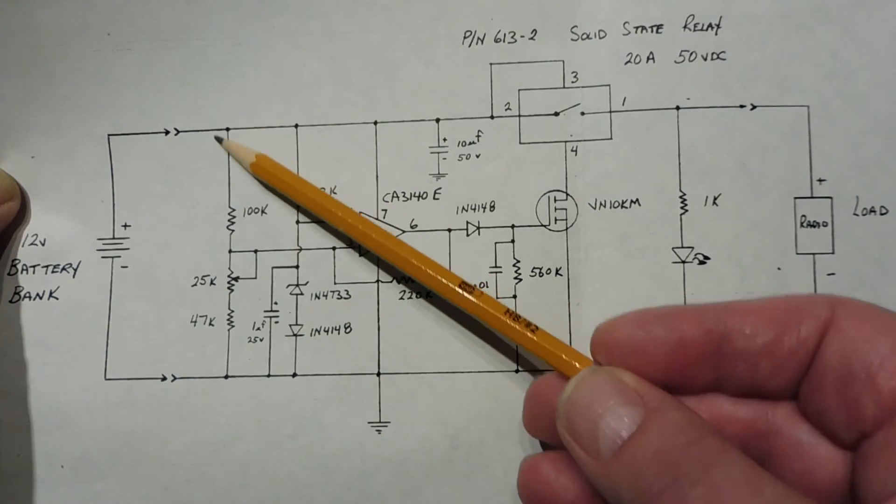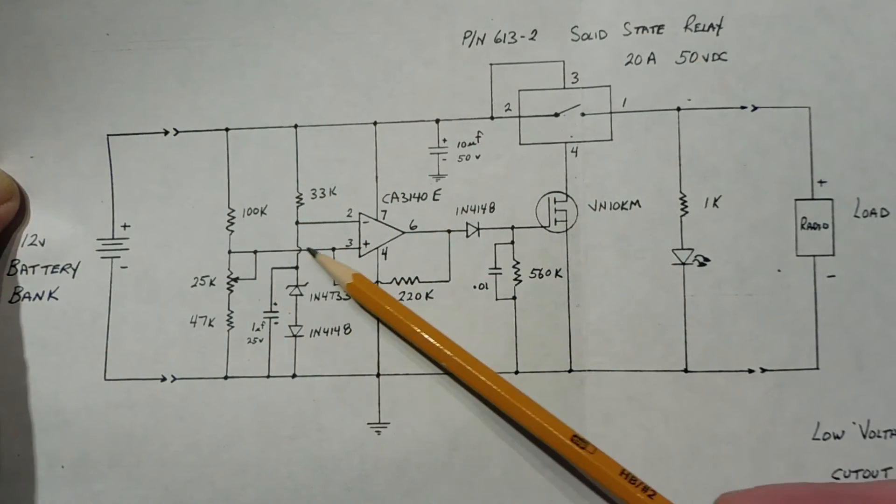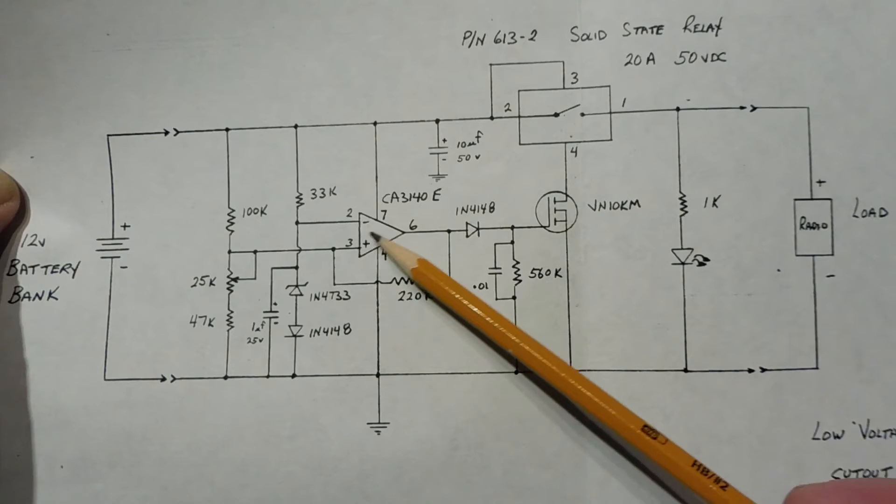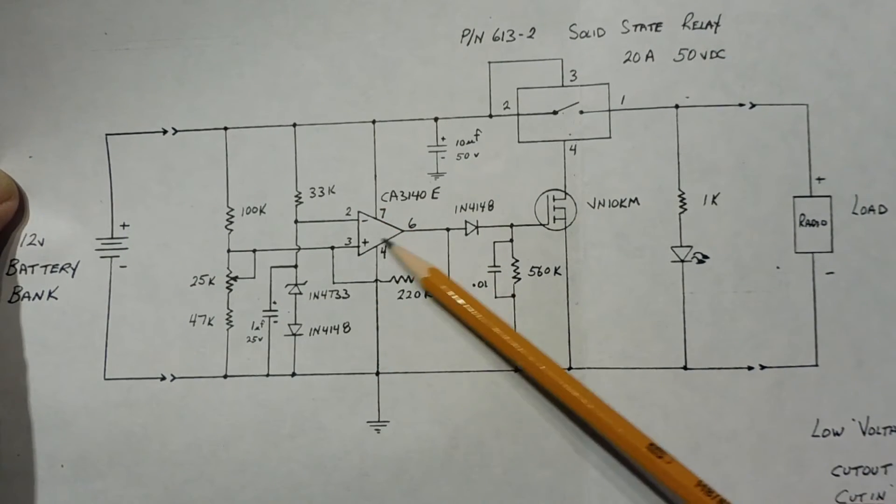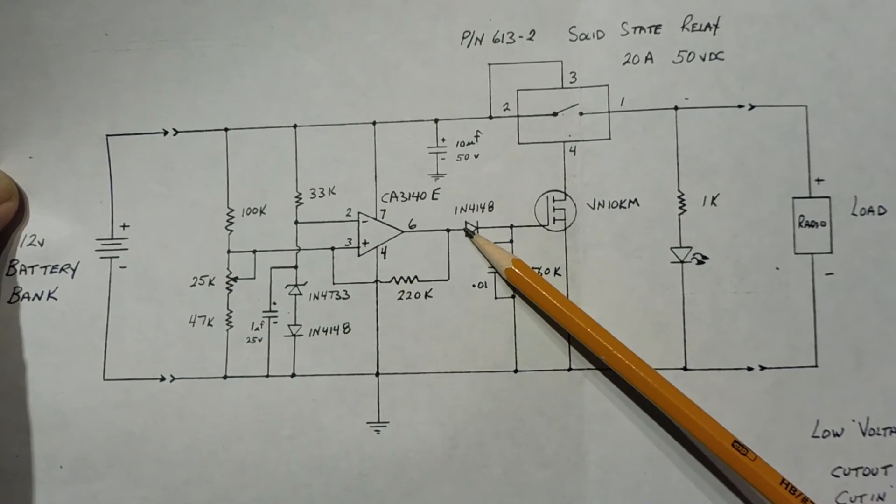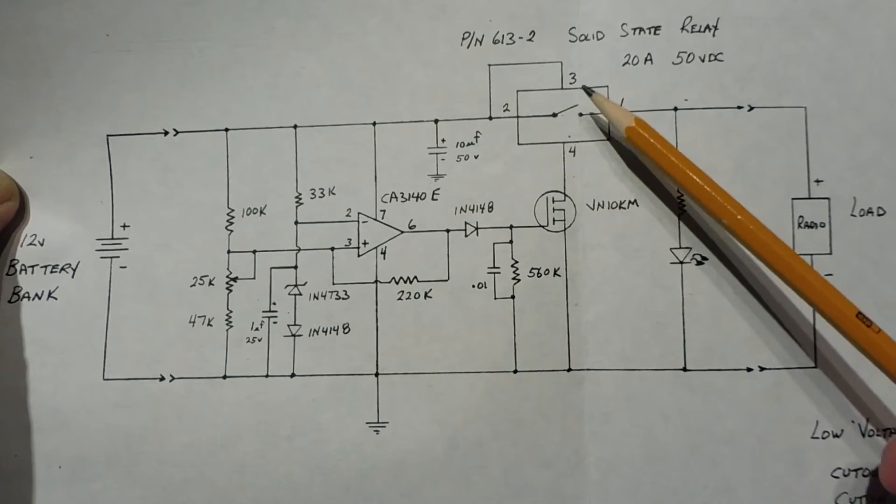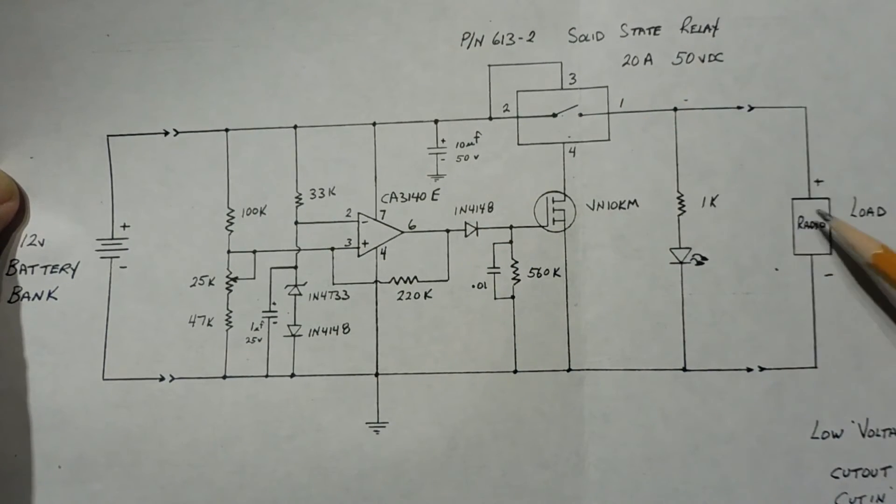And then we put a voltage divider across our battery bank with a potentiometer, and we could adjust the voltage into pin 3 of the op-amp. So when the voltage of pin 3 is higher than the voltage of pin 2, the output pin 6 will be high, which will turn on the MOSFET, which will energize the relay and turn on the power to the load.